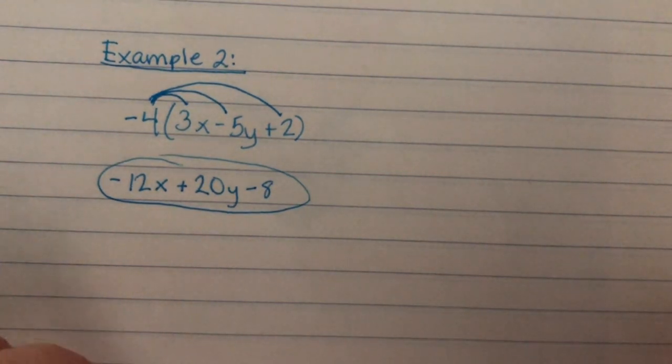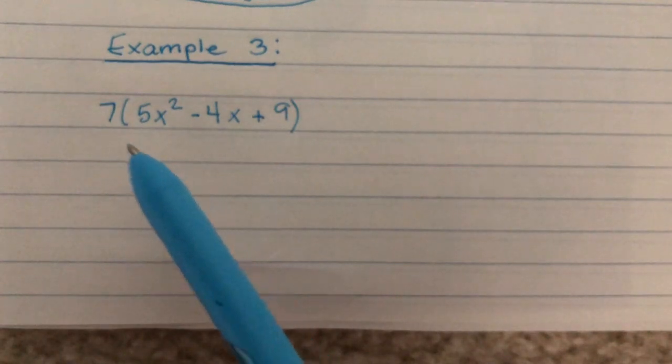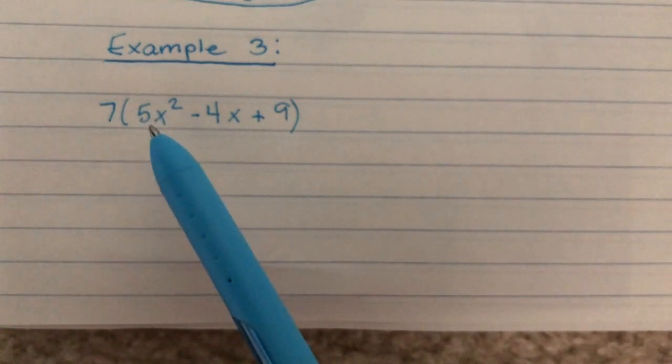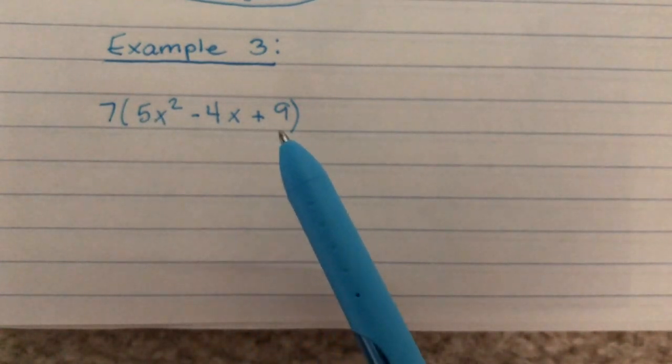Let's try one more example. For our third example, we have 7 times 5x squared minus 4x plus 9. We're going to use the distributive property to simplify this expression, because we have parentheses.